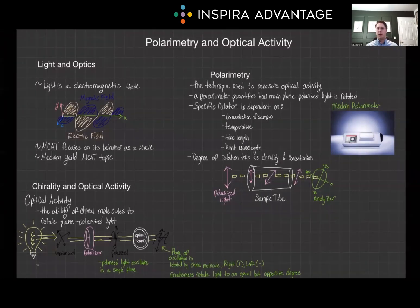Polarimetry and optical activity offers a window into the molecular world that is incredibly important for the chem-phys section of the MCAT, especially when it comes to chirality and enantiomers — one of the highest yield topics from organic chemistry. Thank you so much for watching our video on polarimetry and optical activity, and I'll see you next time.